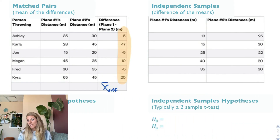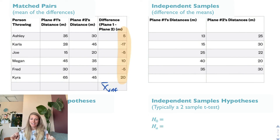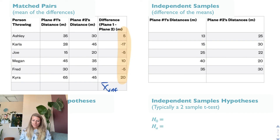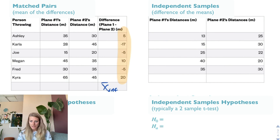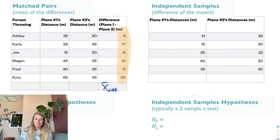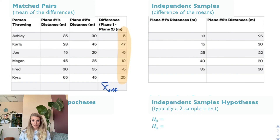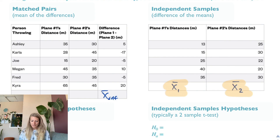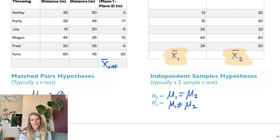Option two: the difference of the means. You don't have friends to do this test with, so you have the two planes and you throw them multiple times. You throw plane one five times, and then you throw plane two five times. Plane one would have its own X-bar and plane two would have its own X-bar. Your null hypothesis is mu sub one equals mu sub two, and the alternative is that they are not equal.